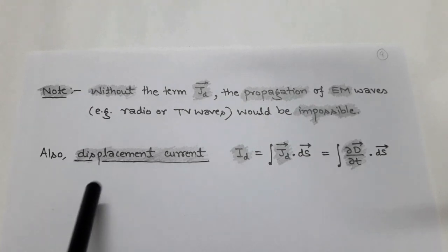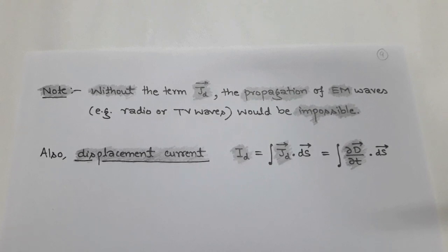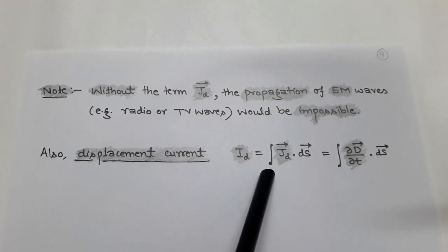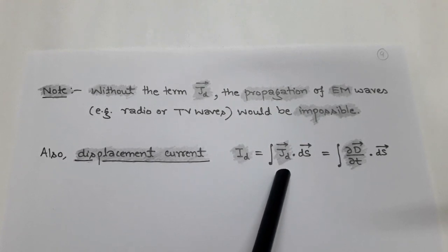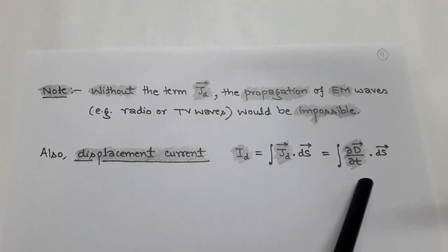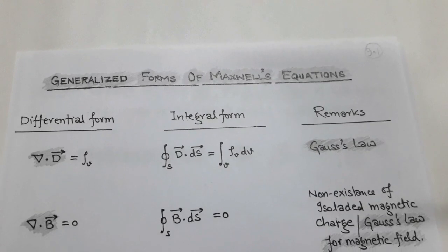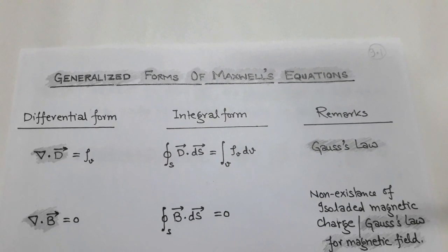For example, radio or TV waves are called electromagnetic waves. From here we can write displacement current, that is I_d, equal to surface integration of J_d dot dS. Here J_d vector is called displacement current density and it is equal to del D vector upon del t. Now we make a summary of all Maxwell's equations in differential form and in integral form.